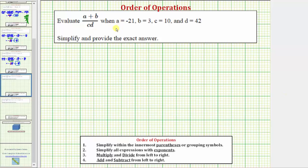We want to evaluate the given expression when a equals negative 21, b equals three, c equals 10, and d equals 42.